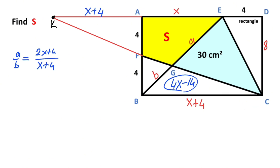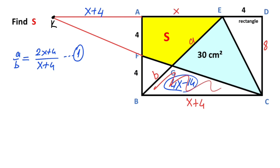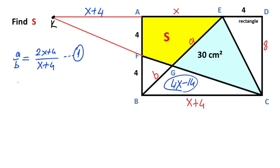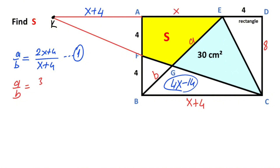This is the first equation. Now if you focus on the triangles — the triangles have the same height — that means the ratio of their areas must equal the ratio of their bases. So 30 over (4x minus 14). This is the second equation.